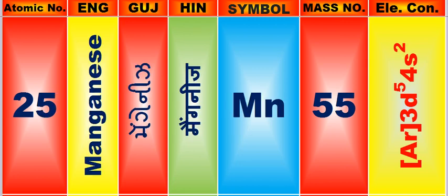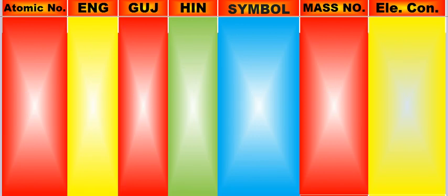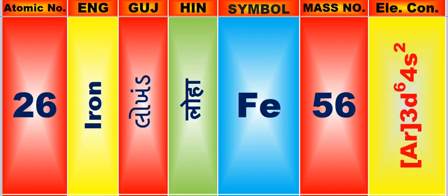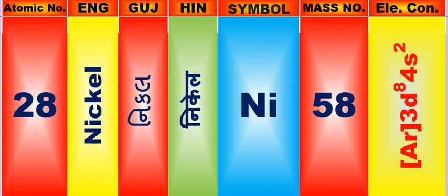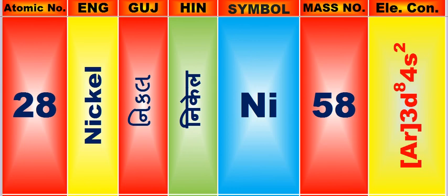Atomic number is 25, name of atom is Manganese. Atomic number is 26, name of atom is Iron. Atomic number is 27, name of atom is Cobalt. Atomic number is 28, name of atom is Nickel.